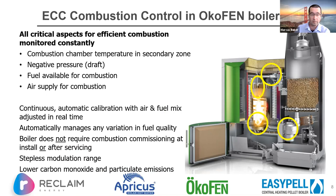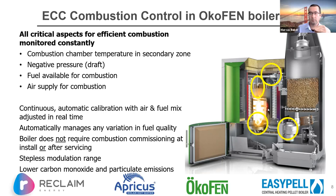It's continuous and automatic calibration of air and fuel. Variation in fuel quality is managed very easily because if you're monitoring temperature and you know how much fuel is going in and how much air, you can determine — for example, if temperature is dropping despite normal fuel input — that you need to introduce more fuel. This is a continuous way for the boiler to monitor and ensure it's hitting optimum conditions.